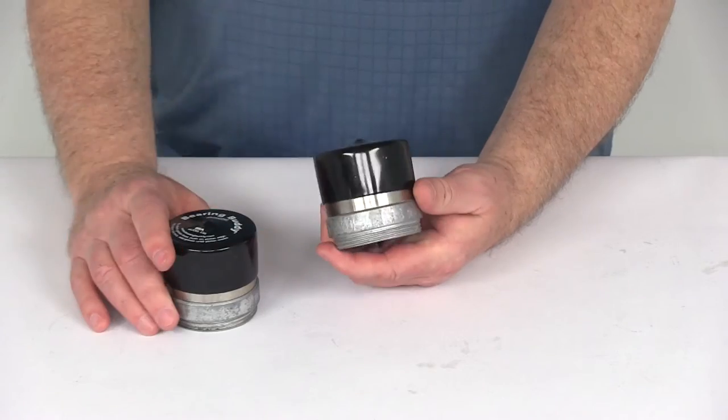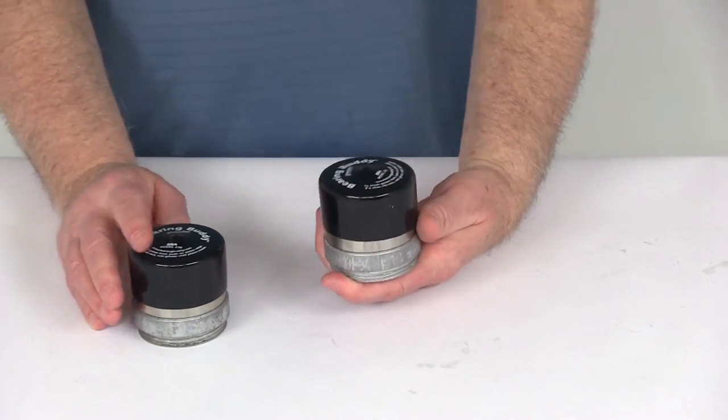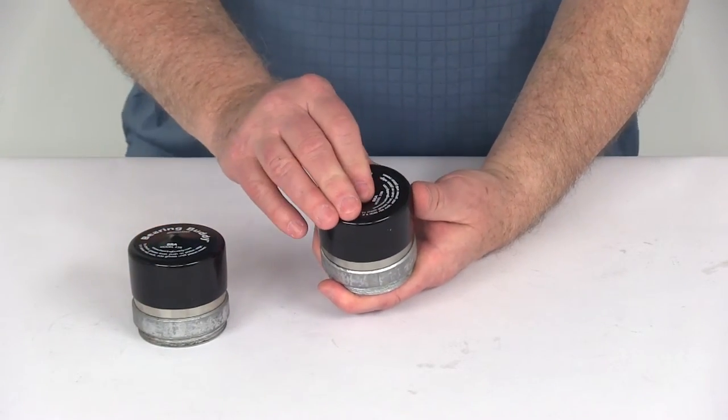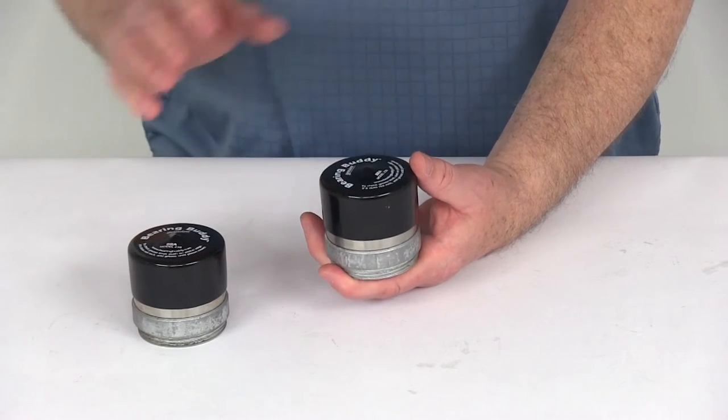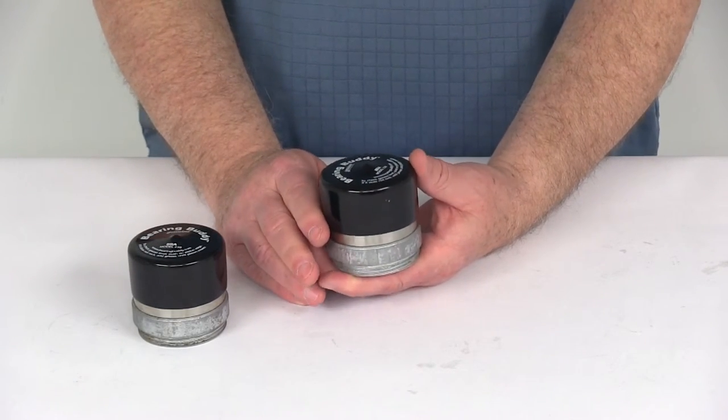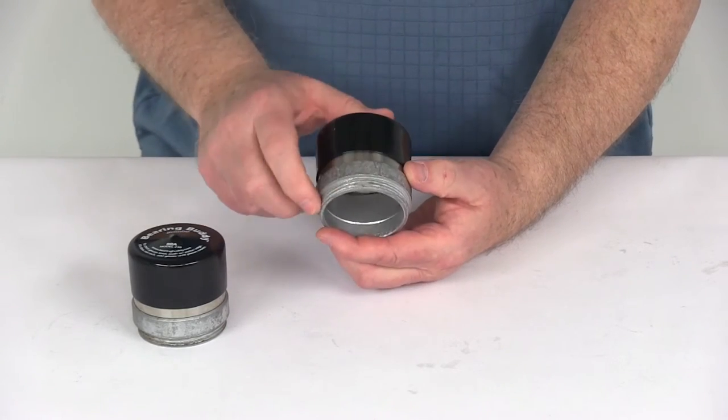And this is threaded, so it does replace the Tie Down turbo lube oil bath caps. It does work with outer bearing models LM-67048 that are hub counterboard, also 15123 and some others.